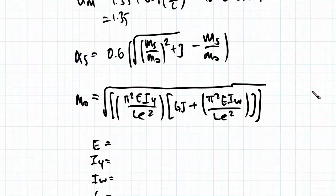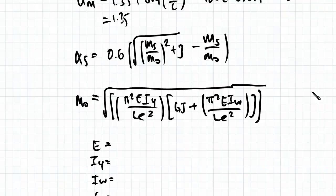Okay, so moving on to alpha s, our slenderness reduction factor. We need two variables, ms and m0. M0 is our reference buckling moment that we need to find, but ms we already have.